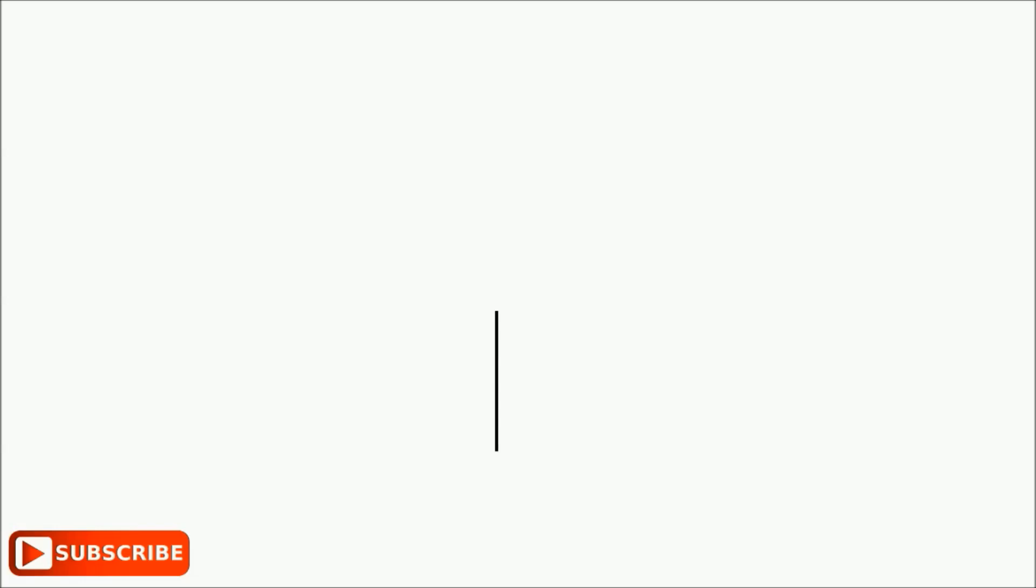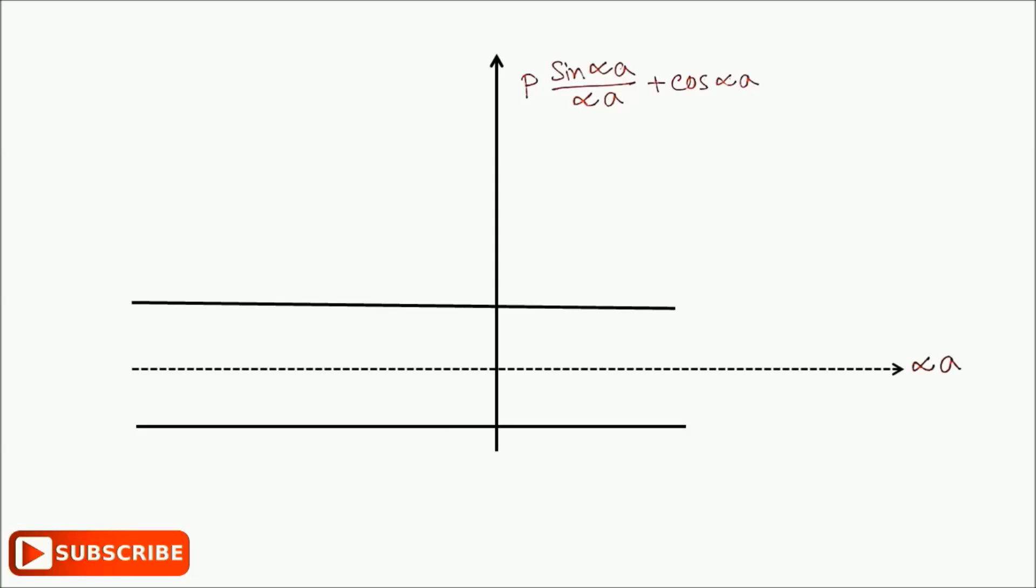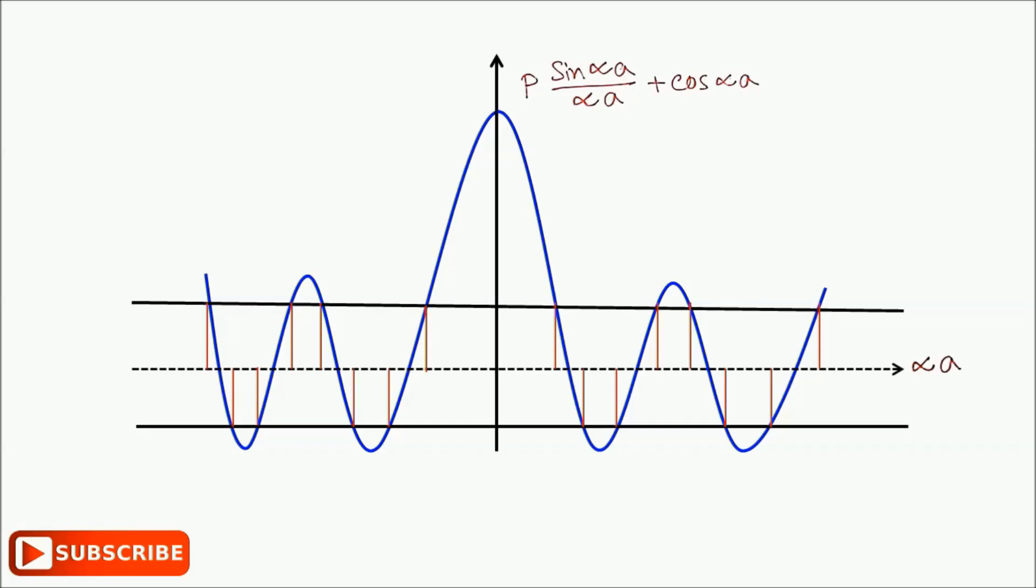Now if you plot P(sin(αa)/(αa)) + cos(αa) versus αa using P = 3π/2, you get a graph like this.